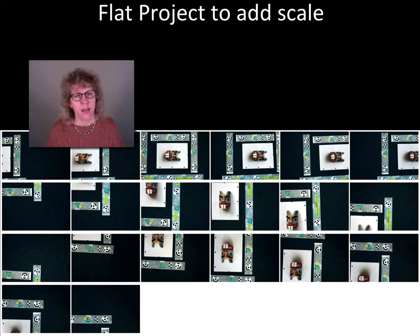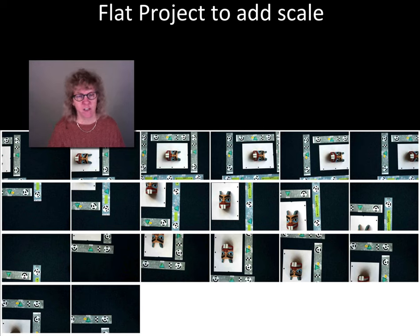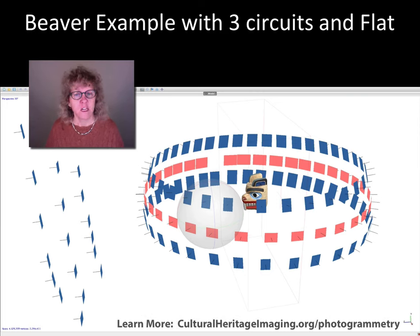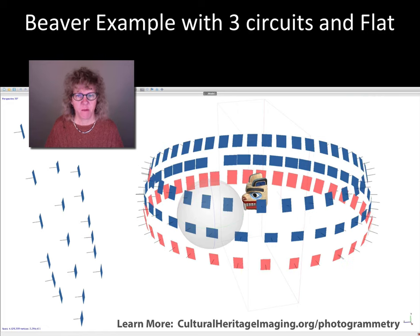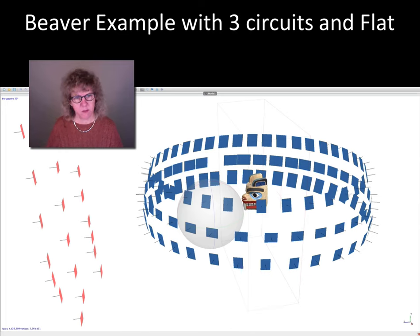When you've finished all your circuits, you can add scale to your model by taking an additional set of images with scale around the subject. You would take the same kind of images discussed earlier with nine look angles moving over the surface. This also gives you the opportunity to take extra images to capture undercuts or hidden areas that might not show up completely from the circuits. Here's an example with the beaver mask: the rectangles show camera positions relative to the subject. The first circuit is shown in orange, then a second circuit moved up, a third circuit moved down and pointed up, and then a flat run of extra images used to add scale and fill in any occluded areas.